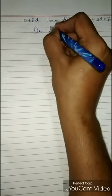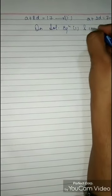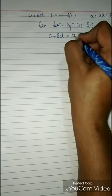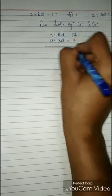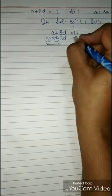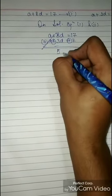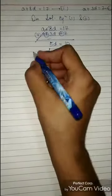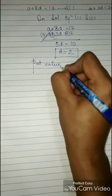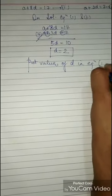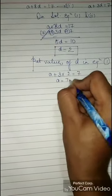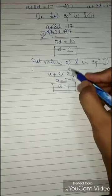Subtracting equation 1 from equation 2: (a + 8d) − (a + 3d) = 17 − 7, so 5d = 10, giving d = 2. Substituting d = 2 into equation 1: a + 3×2 = 7, so a = 1.